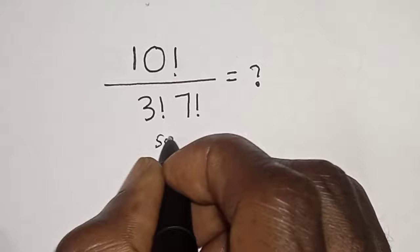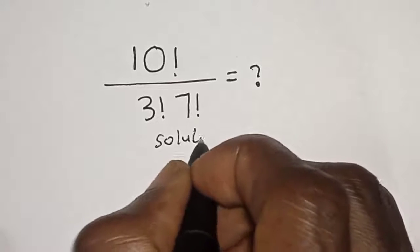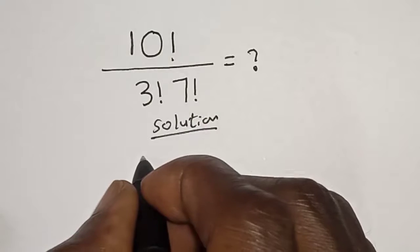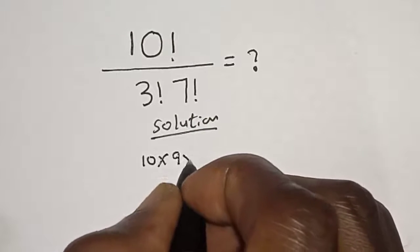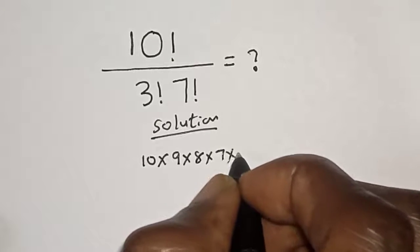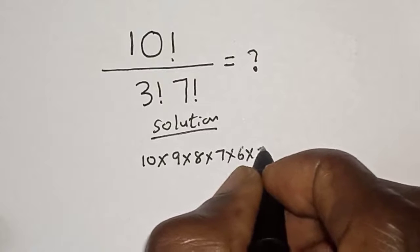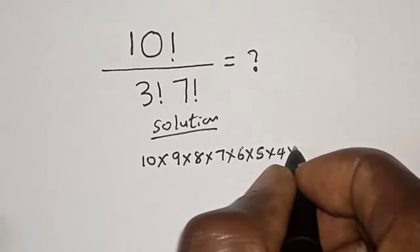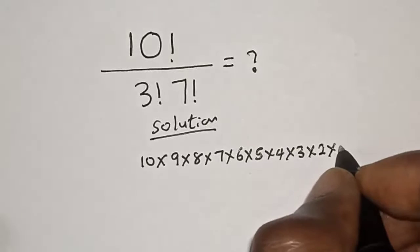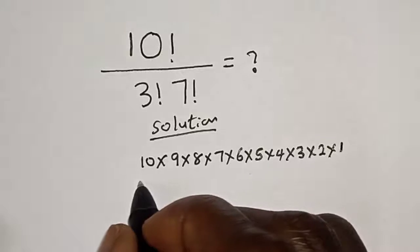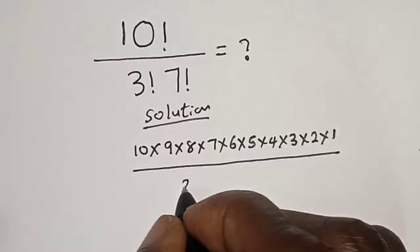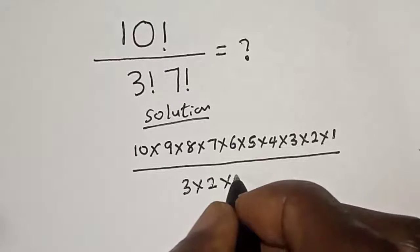Solution: 10 factorial can be expressed as 10 times 9 times 8 times 7 times 6 times 5 times 4 times 3 times 2 times 1, then over 3 factorial, which is 3 times 2 times 1.